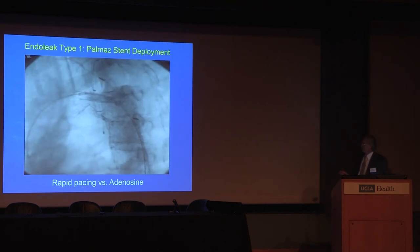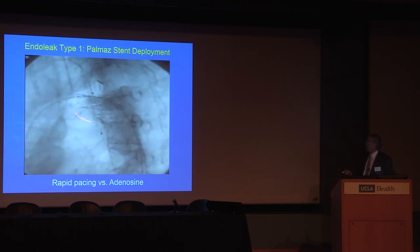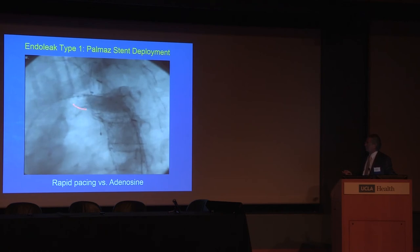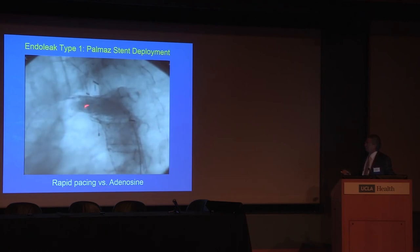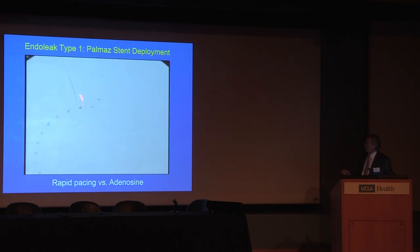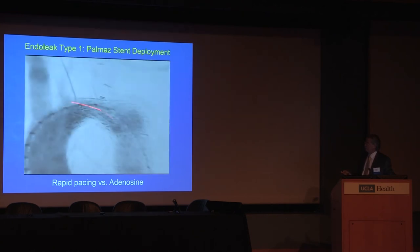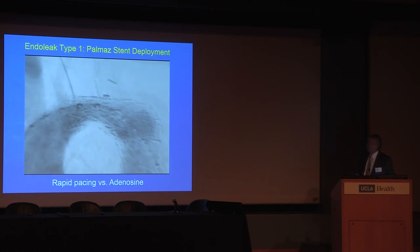Here's a case of aortic coarctation where we did rapid pacing and you can see the deployment of the Palmaz stent to open up the area of aortic coarctation.